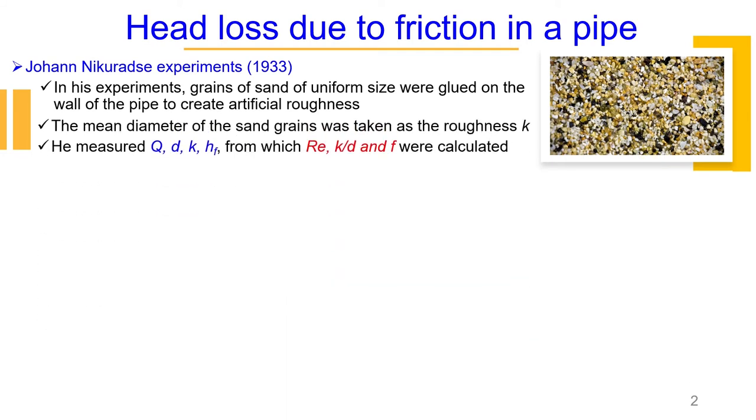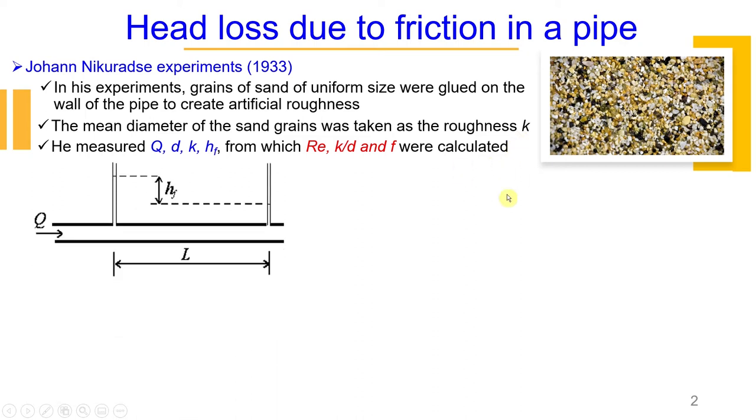Then he measured mean diameter of the sand grains and he took this mean diameter as roughness height. After that, he conducted experiments and measured flow rate going through a pipe, measured diameter, also measured roughness height, and also measured the pressure head drop due to friction.